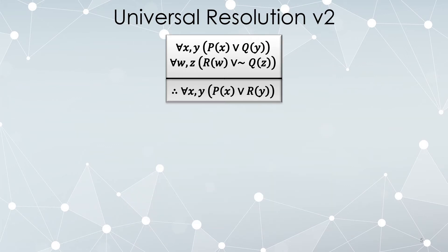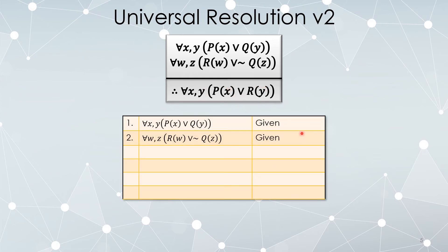Here's a different version of universal resolution. Notice that the variables here are now different and they're both doubly quantified. For any X and Y, either P of X or Q of Y. For any W and Z, either R of W or not Q of Z. Therefore, for any X and Y, P of X or R of Y. So let's begin by stating our two givens.